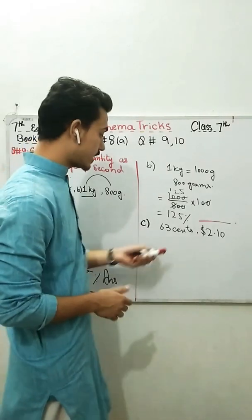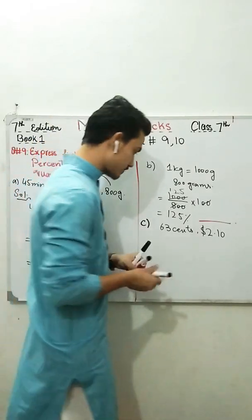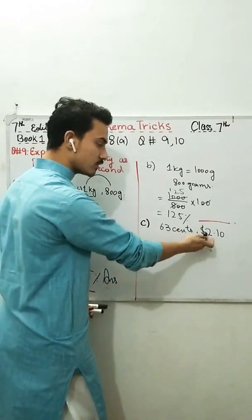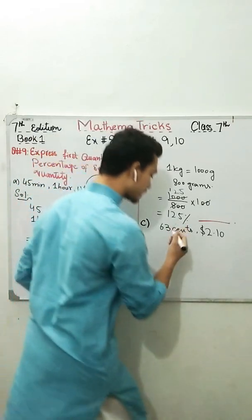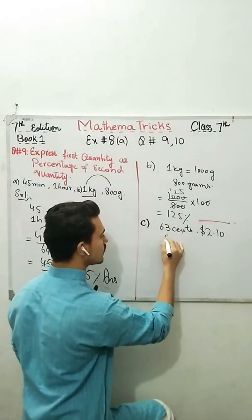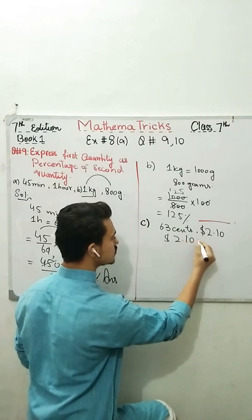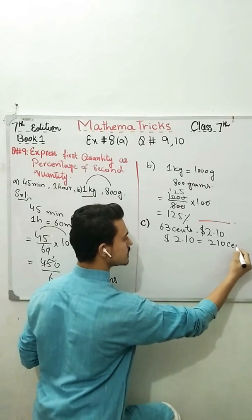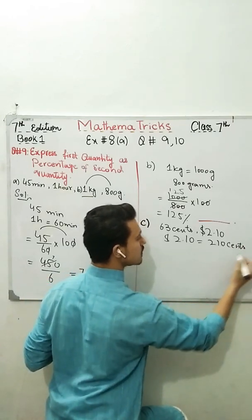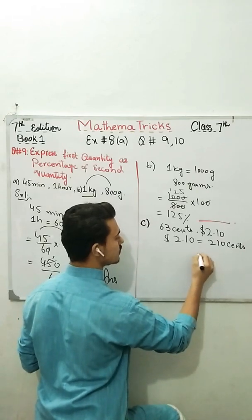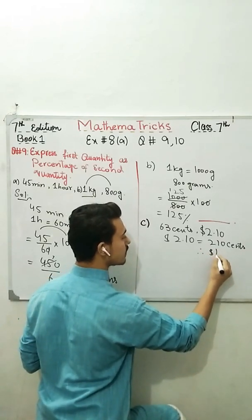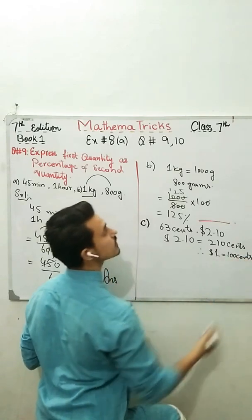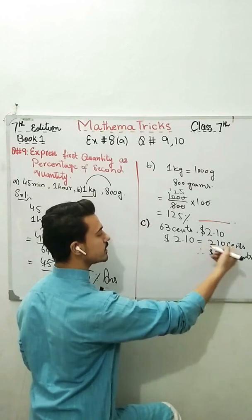So in the C part, I again have two values. I have 63 cents. I need to express this term as the percentage of this term. I got dollar of 2.10 is equals to how many cents? 210 cents. Why? Because we know that $1 is equals to 100 cents. So $2.10 is equals to 210 cents.